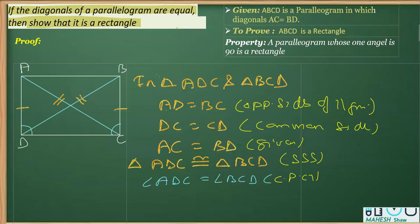Now further you can see that these are adjacent angles of a parallelogram, and adjacent angles of parallelogram are supplementary. So I can write ADC plus angle BCD is equal to 180 degrees. The reason is adjacent angles of parallelogram.